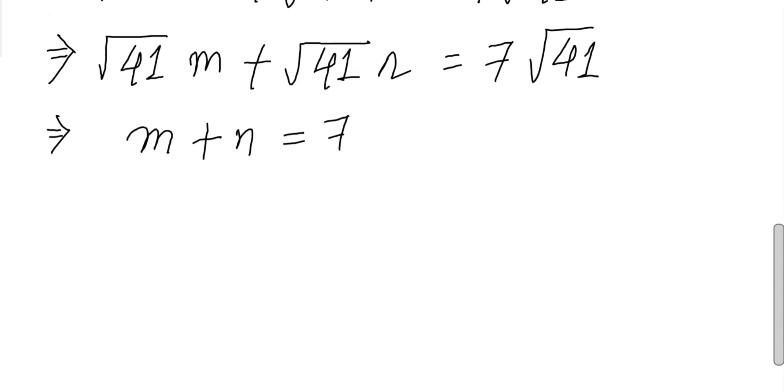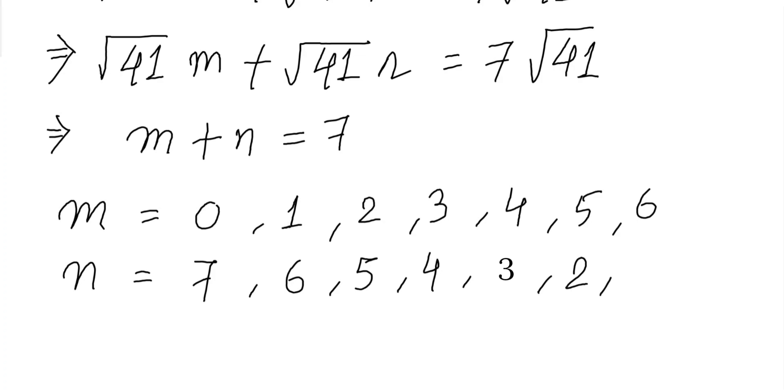Now giving all possible values, let's list: m and n can be (0, 7), (1, 6), (2, 5), (3, 4), (4, 3), (5, 2), (6, 1), and (7, 0).